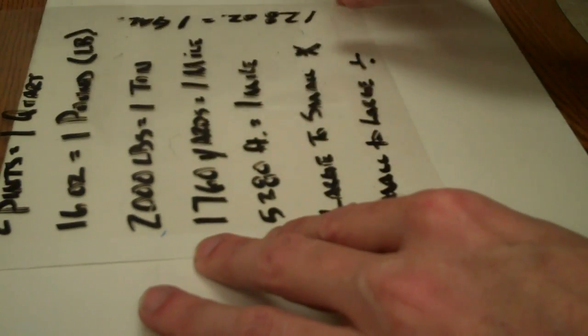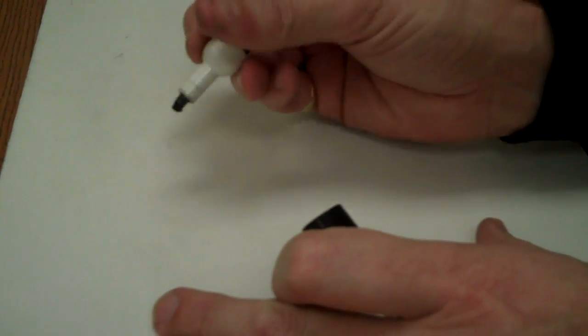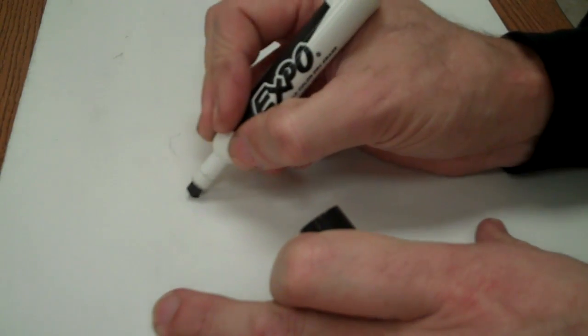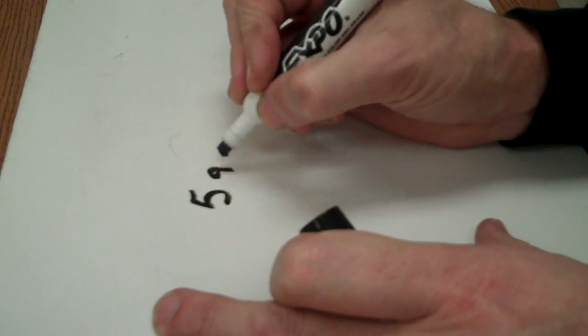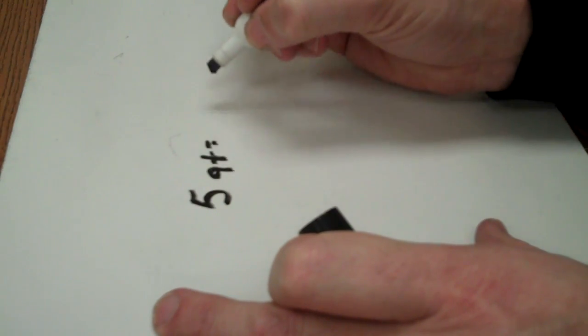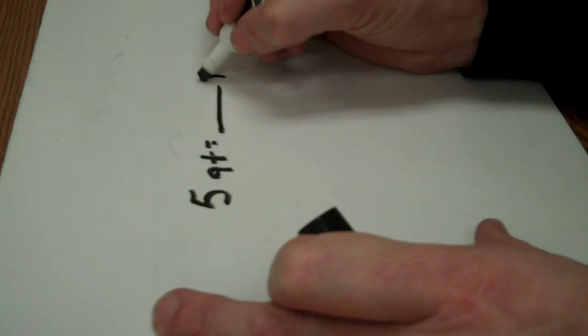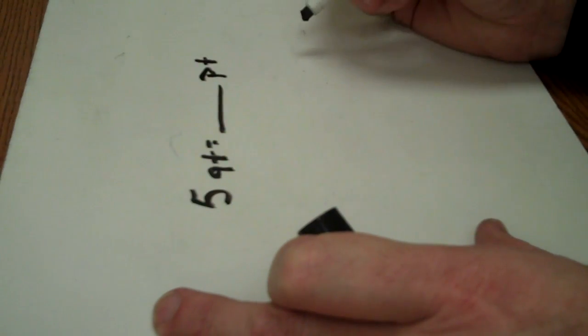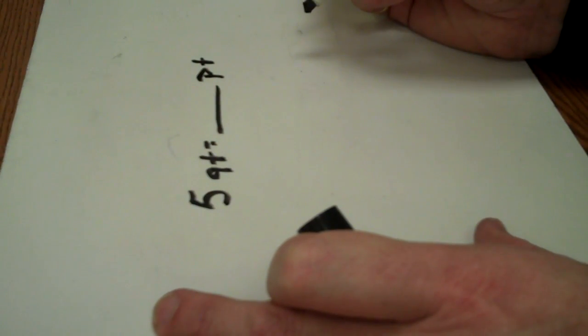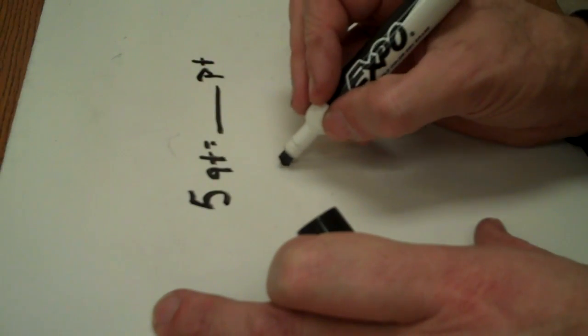So, let's do an example on your homework. You had a question: five quarts equals blank number of pints. Stop and write down what you're given. You're given the number five, so we know we're going to have to mess with that.